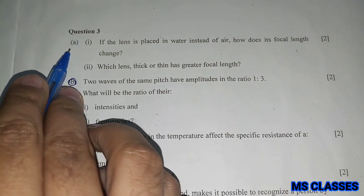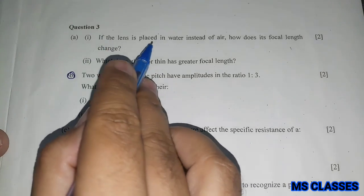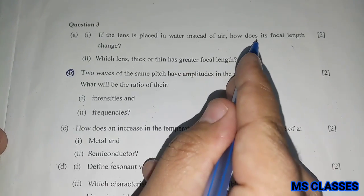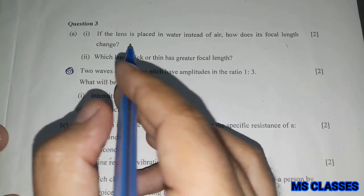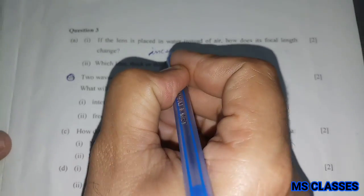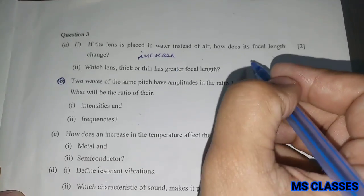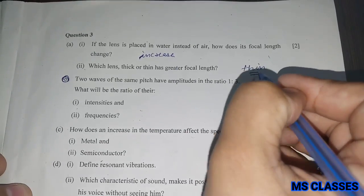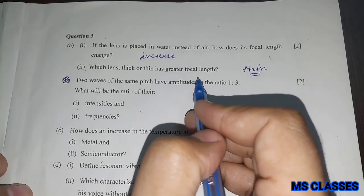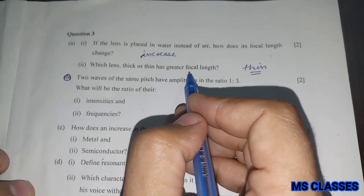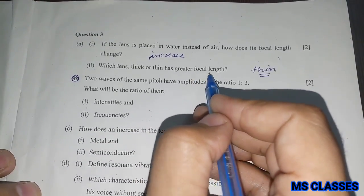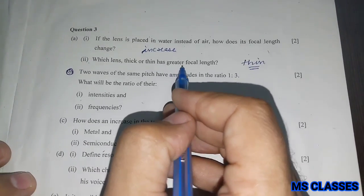Question third, first: If the lens is placed in water instead of air, how does its focal length change? The focal length will increase. Second: Which lens, thick or thin, has greater focal length? Thin lens would have greater focal length because as the focal length increases, the thickness decreases.